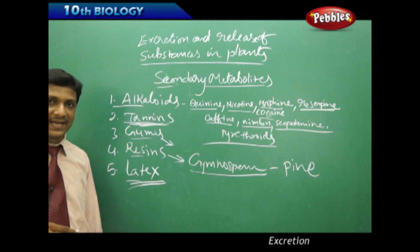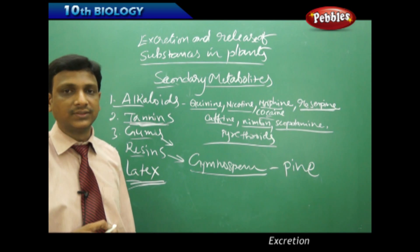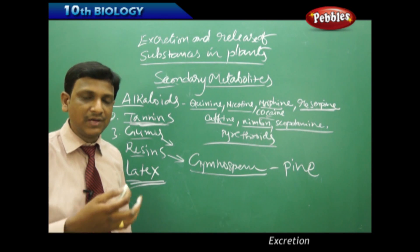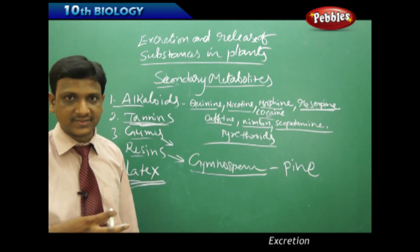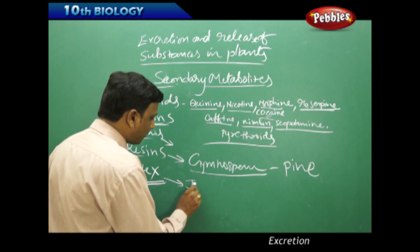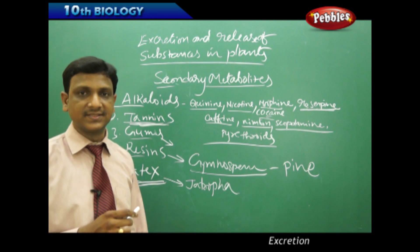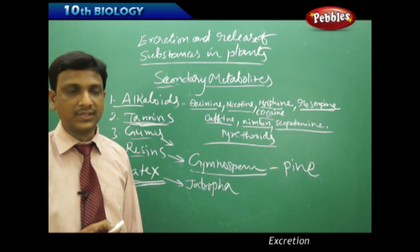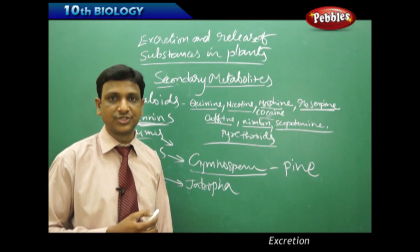Latex is a milky white material obtained by making marks on the bark of a tree. We mostly see latex in rubber trees — the milk of the rubber tree is collected and made into rubber. Latex from the Jatropha plant is used as biodiesel, while latex from the rubber plant is used to make rubber and many other commercial rubber products.